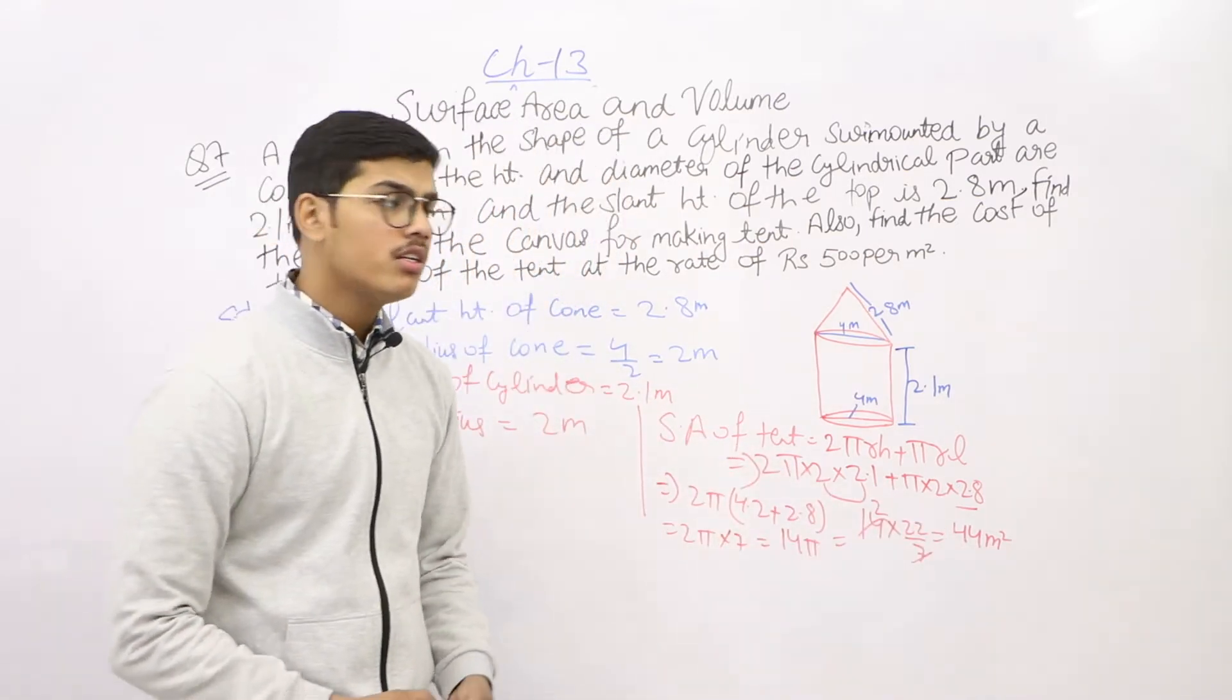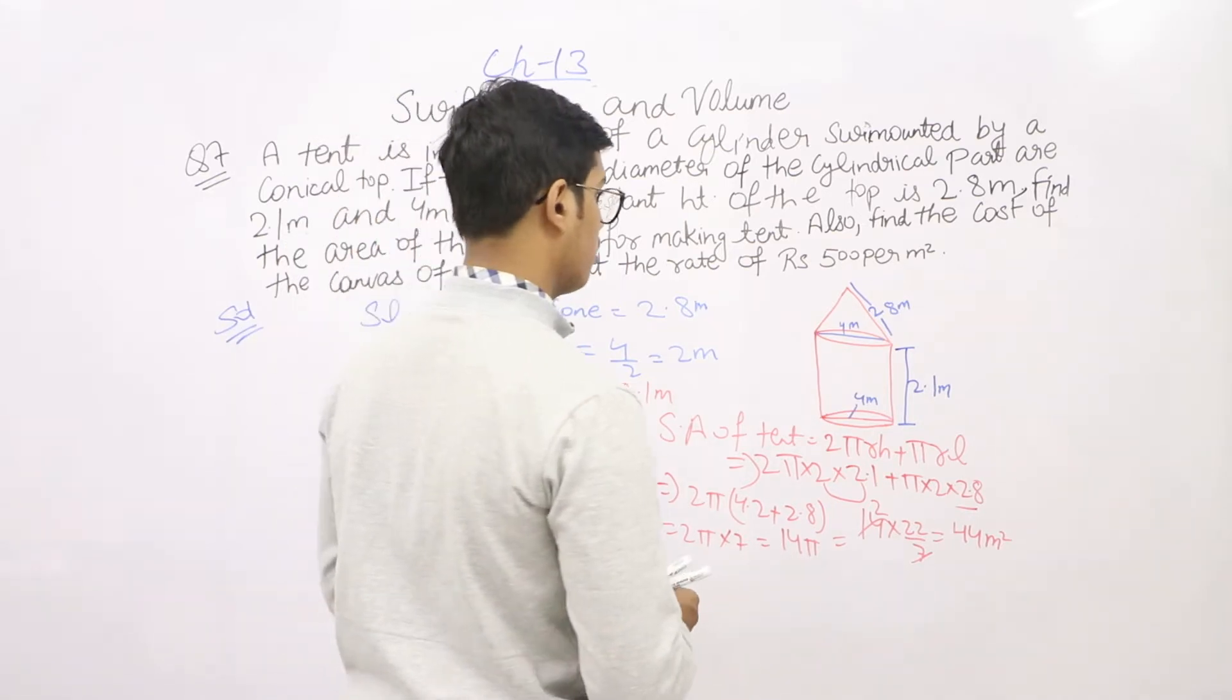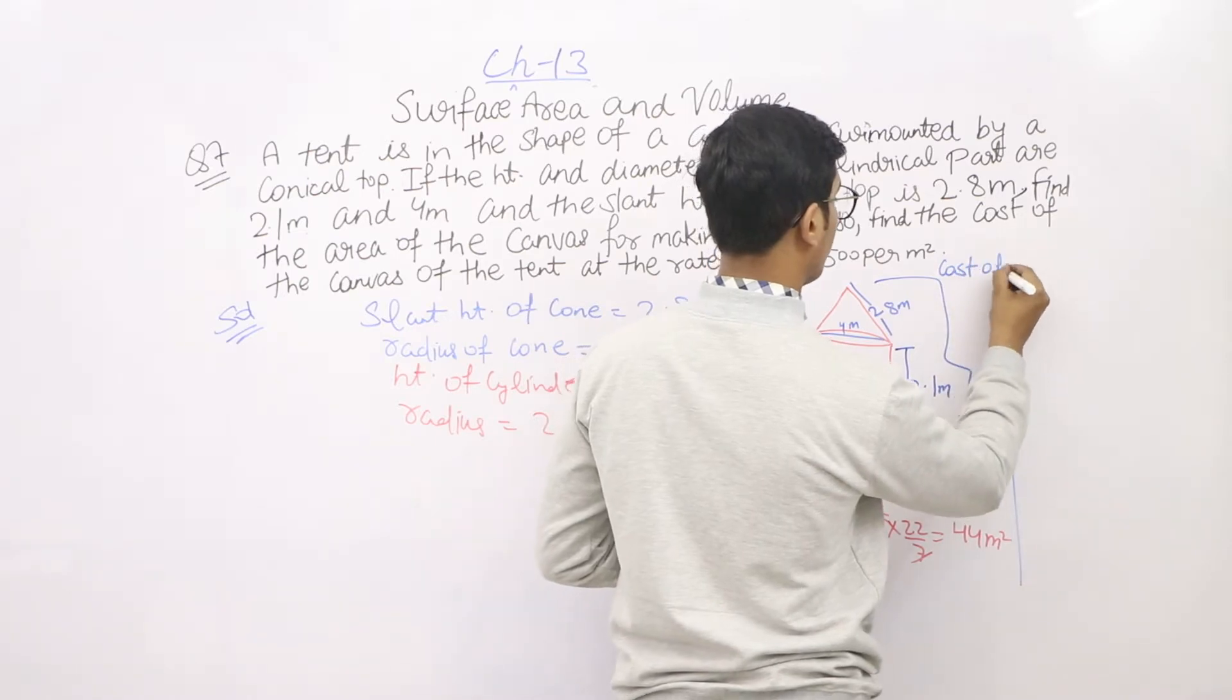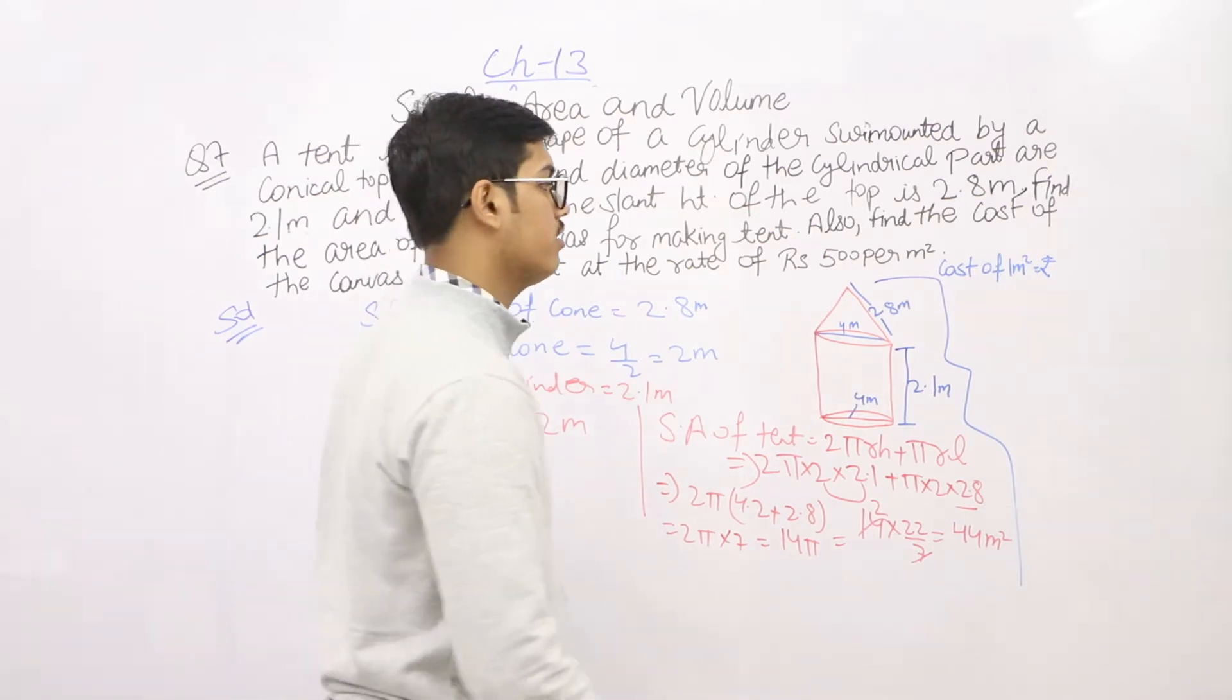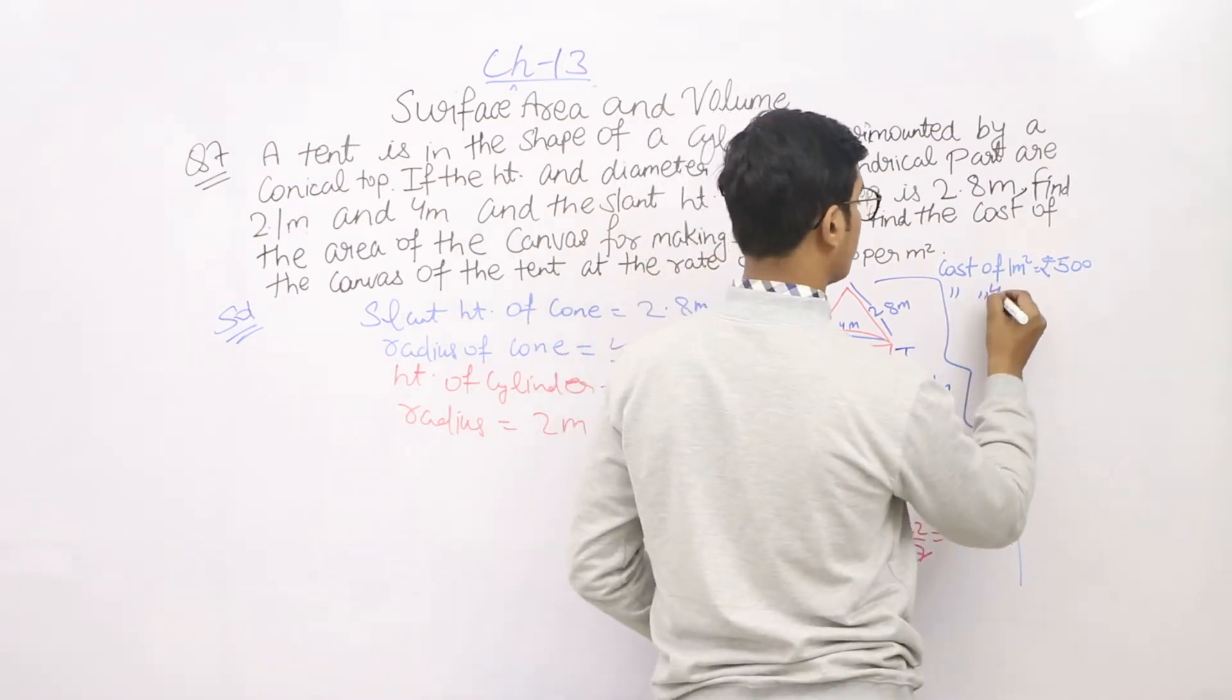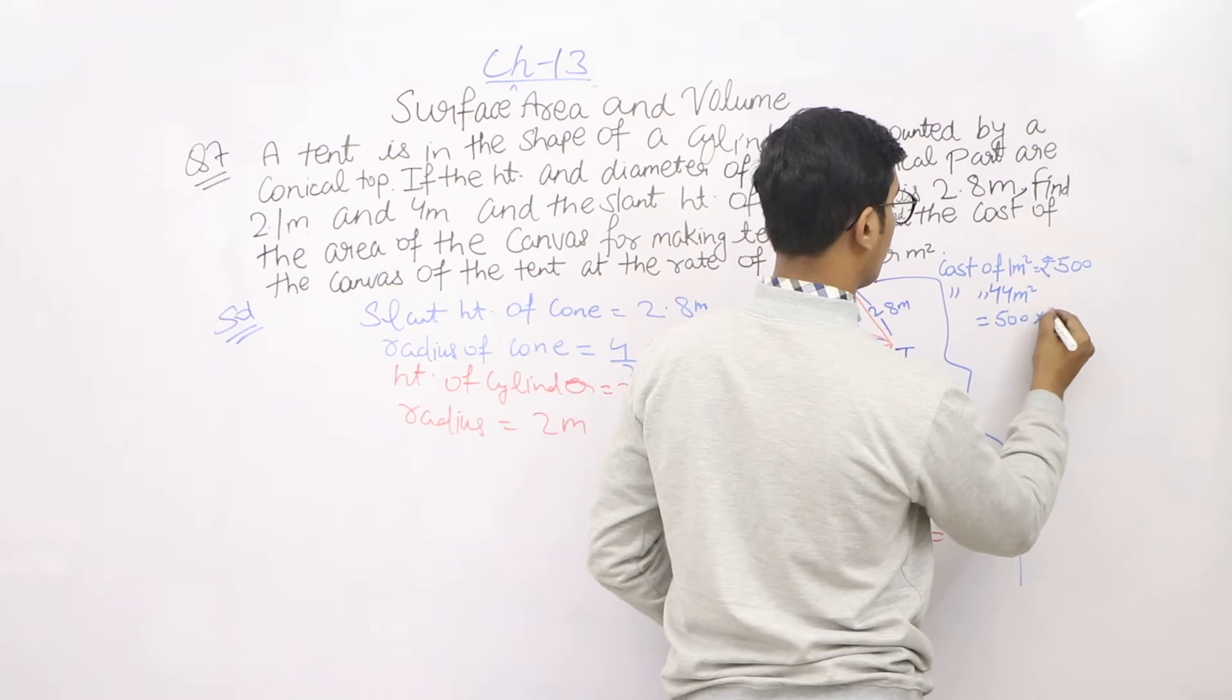Now we will find the cost. Cost of 1 meter square is given as rupees 500. We will find the cost of 44 meter square, which is 500 into 44.